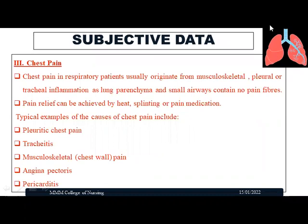The third cardinal sign is chest pain. Chest pain can be associated with respiratory problems or cardiac problems, and we need to elicit the actual cause. In respiratory patients, chest pain usually originates from the musculoskeletal, pleural, or tracheal inflammation, as lung parenchyma and small airways do not have pain fibers.